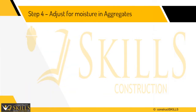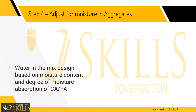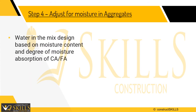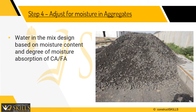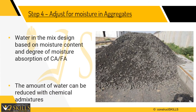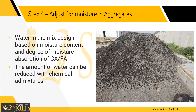Step 4: Adjust for moisture in aggregates. This step adjusts the amount of water in the mix design based on the moisture content and degree of moisture absorption of coarse and fine aggregates. The amount of water can further be reduced with chemical admixtures like a water reducer.